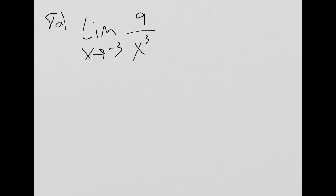So this one, I'm looking at the limit as x goes to negative 3 of this guy. Now, this is actually great because normally with limits I look for spots where I get a 0 over 0. Notice I can plug the negative 3 in here and just get 9 over whatever that is.